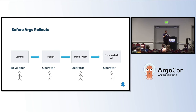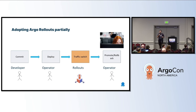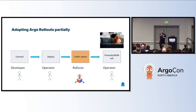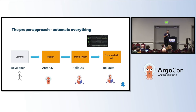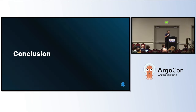They find Argo Rollouts and say, oh, this is great, let's adopt it. But they adopt it only for the traffic switch — they use it only to make the canary or blue-green progress. That's not the correct way, because you still have humans in the loop. The correct way to adopt Argo Rollouts is to automate everything. Argo Rollouts should make the decision for the deployment — not a human. And you must also automate the deployment itself, with Argo CD or anything else you can use.